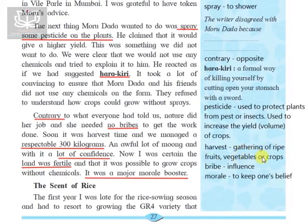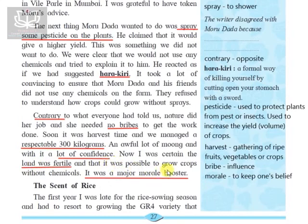During the harvest — the gathering of ripe fruits, vegetables, or crops — they managed a respectable 300 kilograms of moong. This gave them an awful lot of confidence. Now the writer was certain that the land was fertile and that it was possible to grow crops without chemicals. It was a major morale booster — his belief that without any pesticides or chemicals, the naturally fertile land could grow a healthy crop was confirmed. And with that, the first lecture ends.